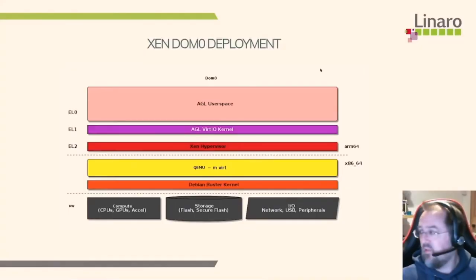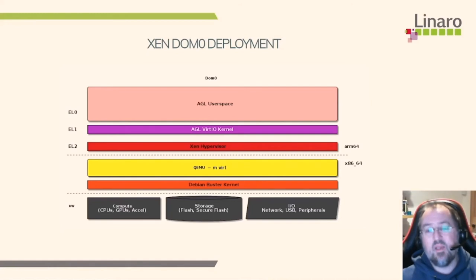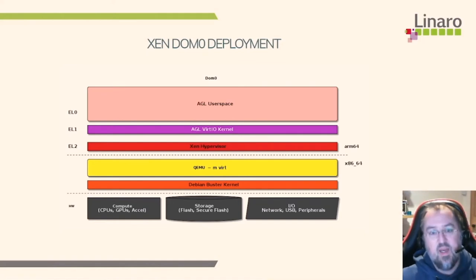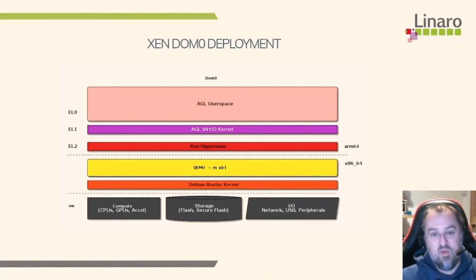Now let's talk about our Xen deployment. The Xen system looks broadly the same at the top end — the same AGL kernel, the same AGL user space — but this time with the Xen hypervisor. The design of Xen is that the hypervisor is much thinner and usually leaves hardware emulation to something else. In a Dom0 deployment, the guest has direct access to the hardware — in this case a fully emulated Versatile Express board running QEMU's ARM64 emulation. As far as the Xen hypervisor is concerned, all this hardware really exists, and that is perfectly fine for VirtIO.